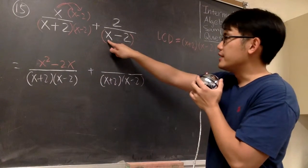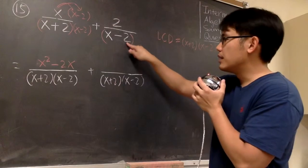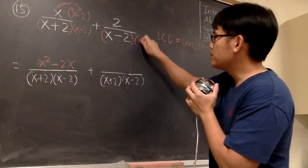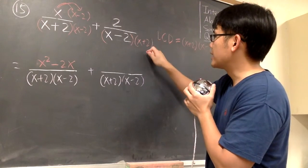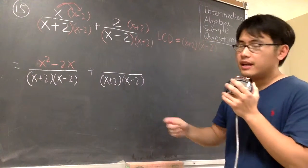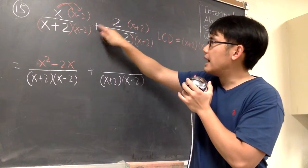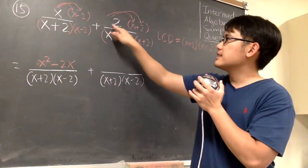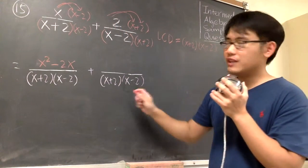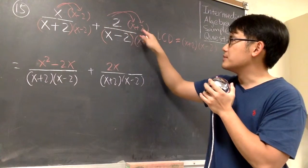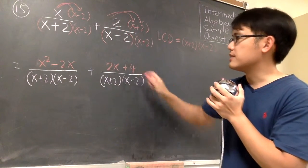For the second one, the denominator was x minus 2. But I need to have this x plus 2. So I'm going to multiply by x plus 2 on the bottom and also on the top. And then I'm going to distribute the 2 into the parentheses. 2 times x, that will give us 2x. And then 2 times 2, that will give us 4.